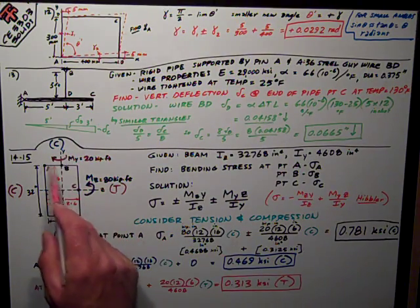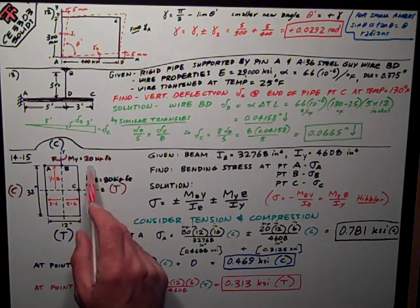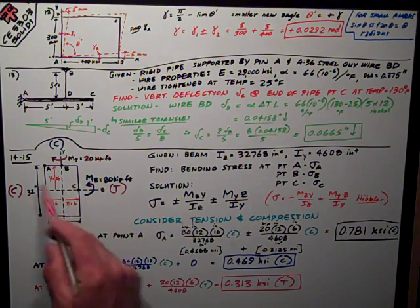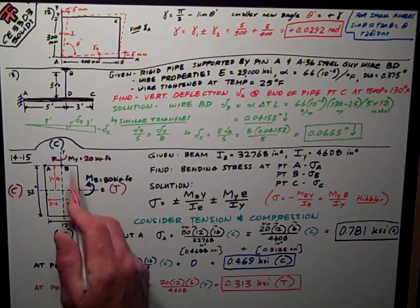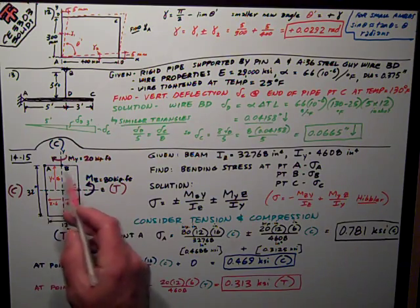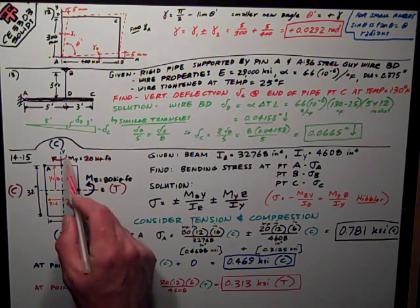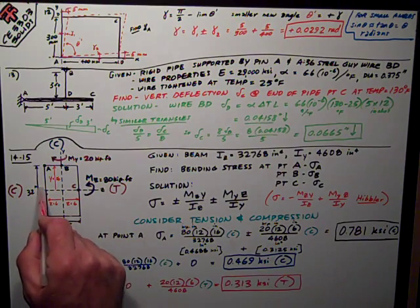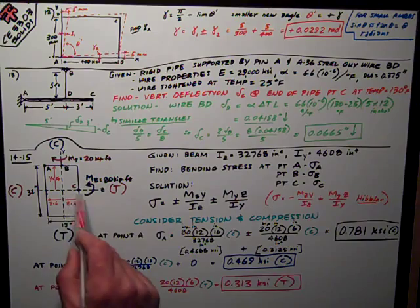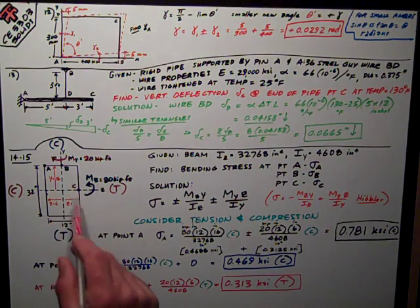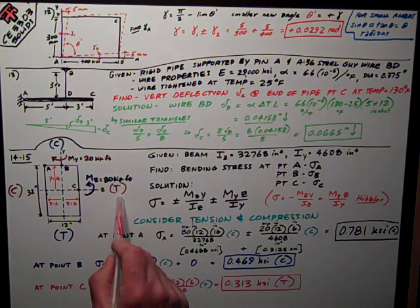Similarly, what does the moment M_y about the y-axis create? It's technically negative moment about the y-axis. But instead of getting caught up in that confusion, think about the fact that it's creating compression on this side of the neutral axis, the vertical neutral axis, and it's creating tension on this side.